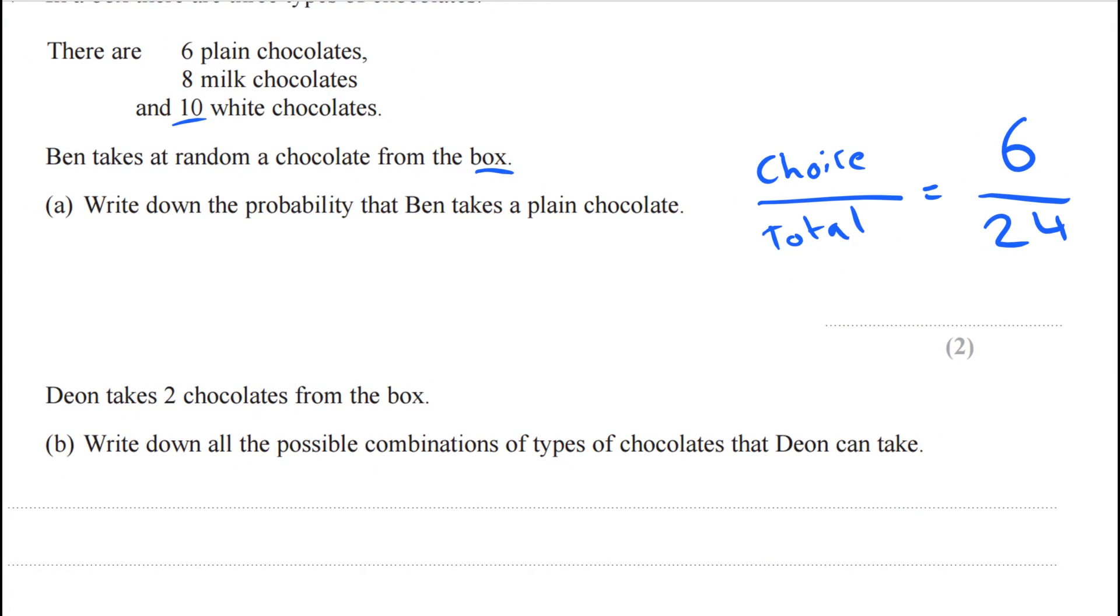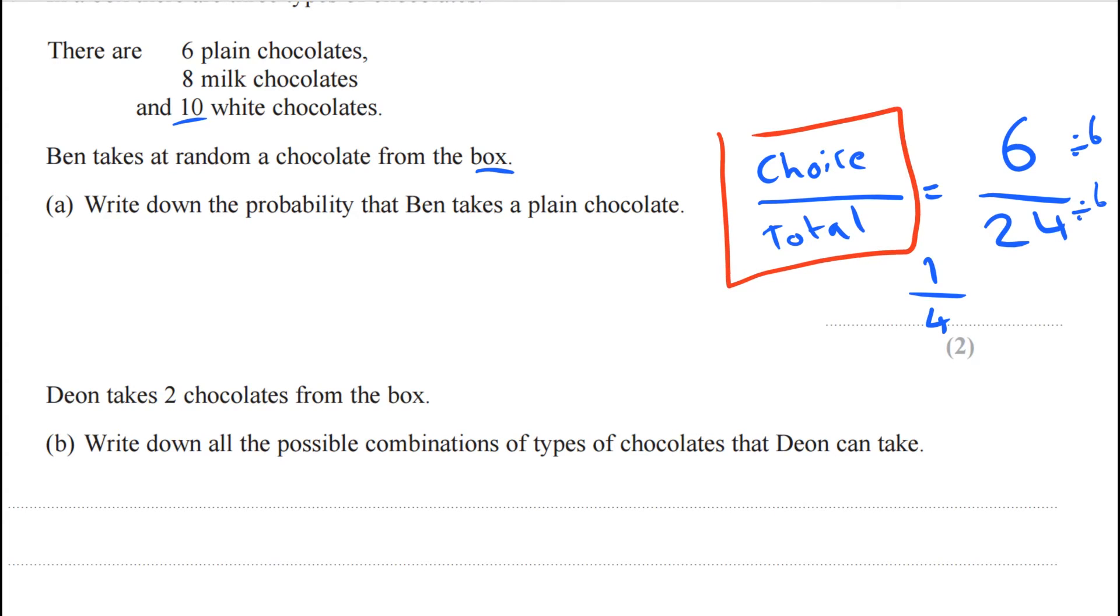Now we could simplify that if we want. So six over 24, we could divide top and bottom by six and we would get one over four, so a quarter chance. But the key thing I want you to remember is to do a probability we're going to do the choice over the total.